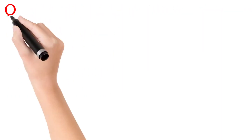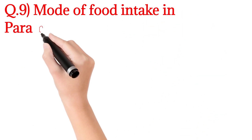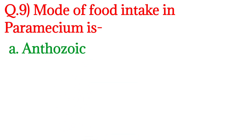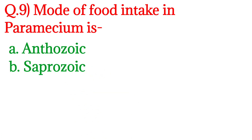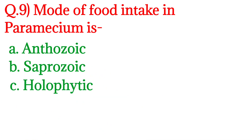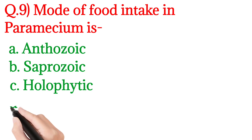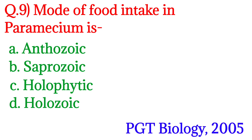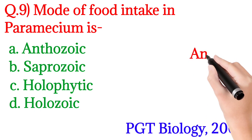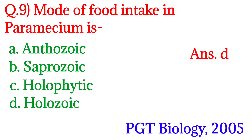Question 9: Mode of food intake in Paramecium is? Option A: Autozoic, Option B: Saprozoic, Option C: Holophytic, Option D: Holozoic. This question was asked in PGT Biology 2005. The answer is Option D: Holozoic. Holozoic mode of food intake is found in Paramecium.